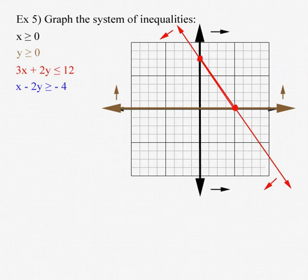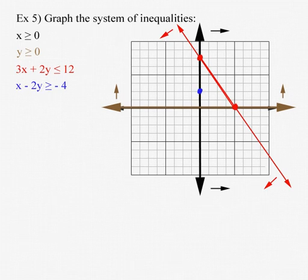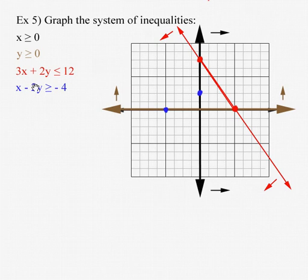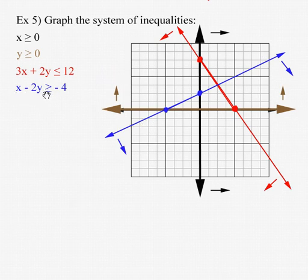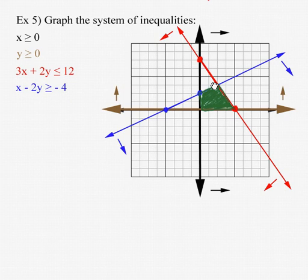Now for the blue line: putting 0 for x gives negative 2y greater than or equal to negative 4, so y equals 2 on the y-axis. Putting 0 for y gives x equals negative 4 on the x-axis. There is an equal sign, so a solid line. Testing (0, 0): 0 minus 0 is greater than or equal to negative 4 — true — so everything below and to the right of the blue line is what we want. For the final answer, we find where everything overlaps: right of the black, above the brown, below and left of the red, and below and right of the blue. That gives a nice quadrilateral region shaded in green. That's our look at solving inequalities and systems of inequalities by the graphing method.